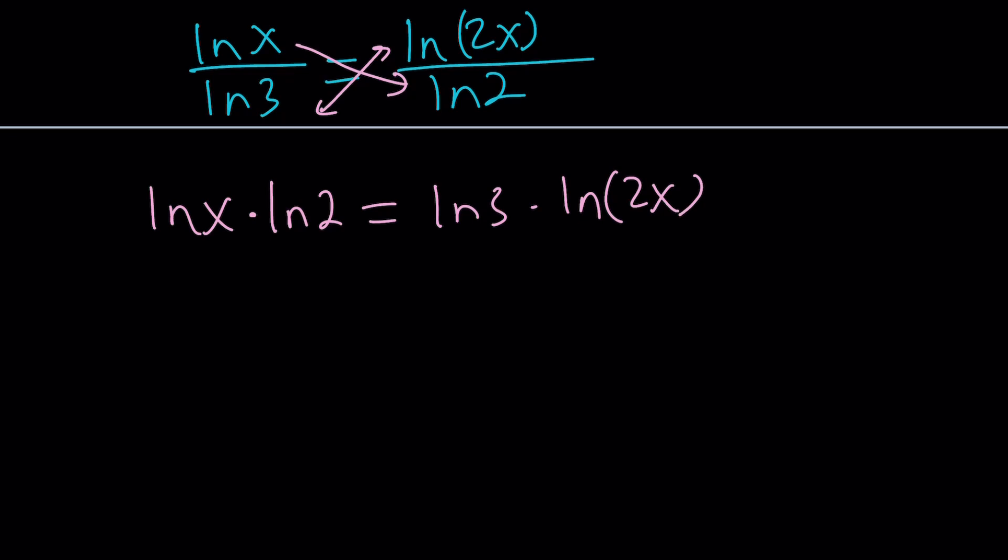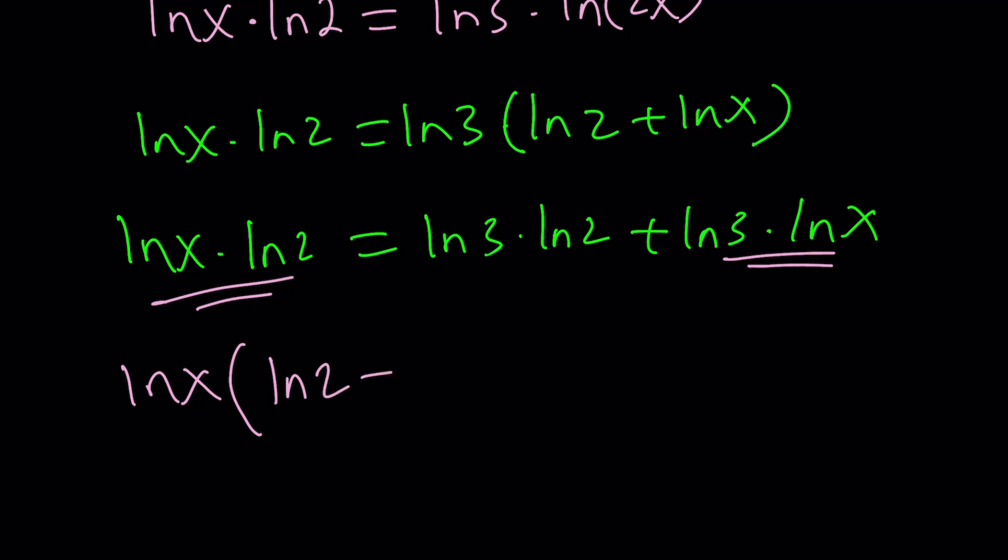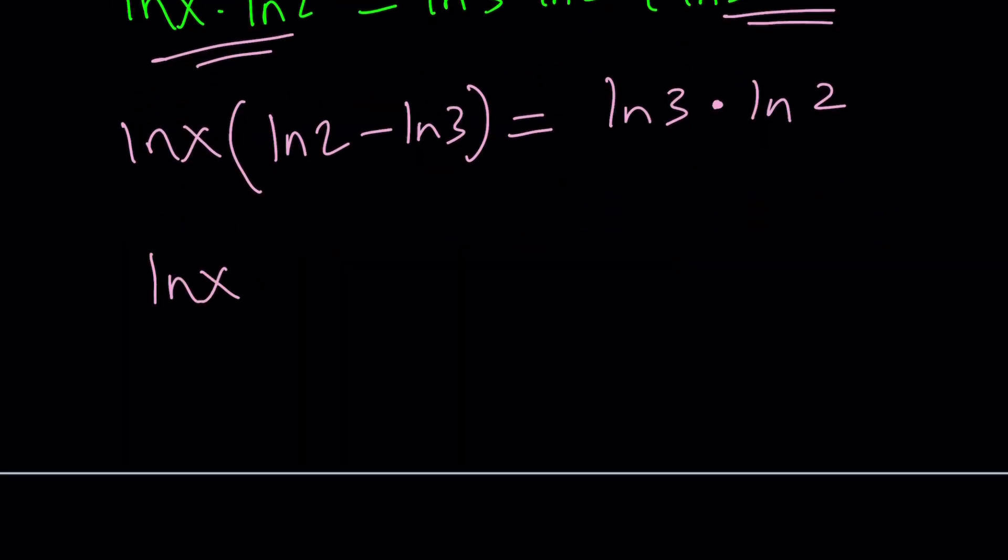You might be tempted to put the ln(2x) and ln(x) together, but there's an easy way to do it which uses the product property. If you have the log of a product, you can write it as the sum of the two logs. Then we can use the distributive property. We're going to put the ln(x)s together, this one and this one. Subtract ln(x) and take it out. You're going to get ln(2) minus ln(3). ln(3) times ln(2) - this is not good because we didn't have that before. Don't worry, we'll take care of it. Now we're going to divide.